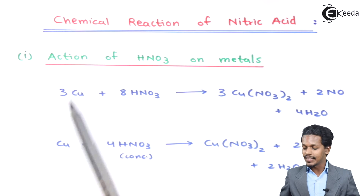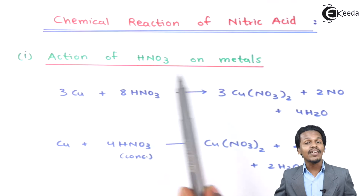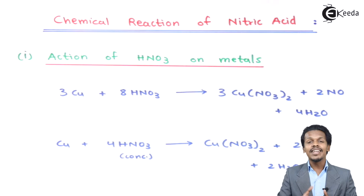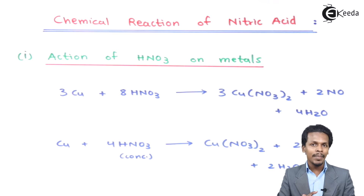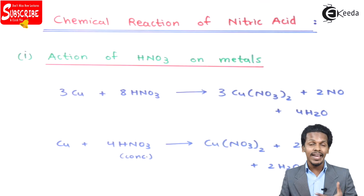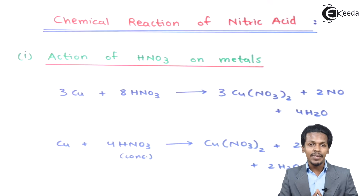Starting with the first part: the action of nitric acid on metals. Nitric acid is not very reactive to noble metals like gold or platinum, but it is very reactive to copper, zinc, S-block elements, and some D-block elements.